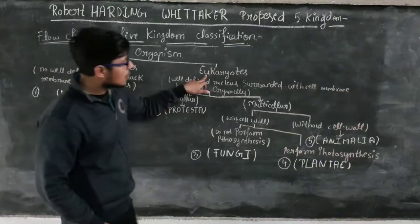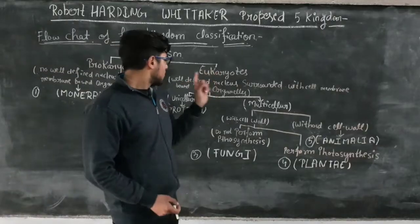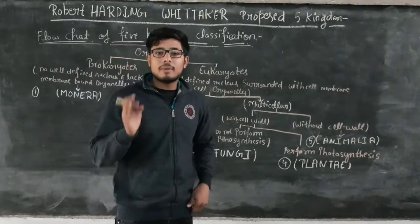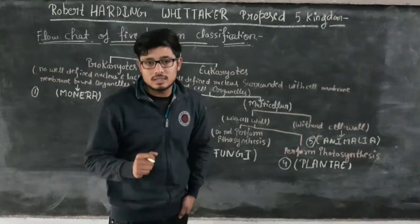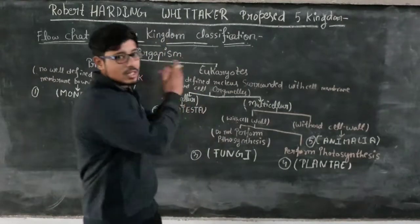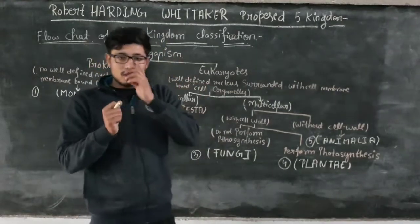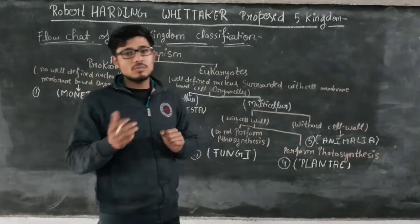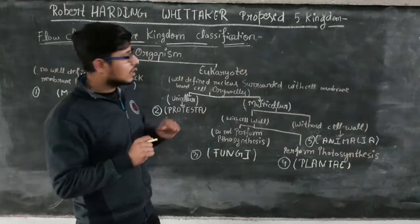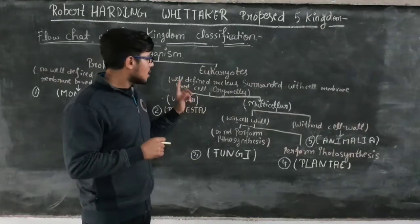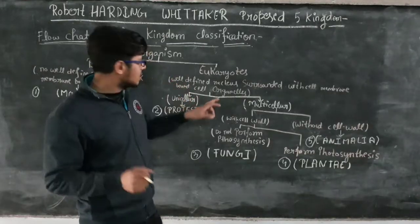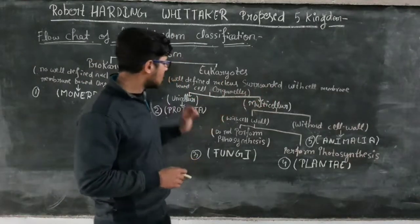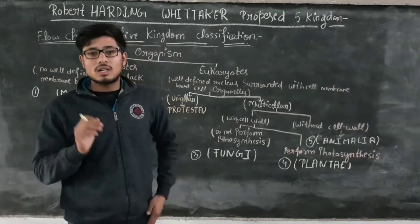The Eukaryotic Organism is where the well-defined nucleus is surrounded with the cell membrane and has membrane-bound organelles. This is just the opposite of Prokaryotic — there is no lack of membrane-bound organelles, as the nucleus is surrounded with the cell membrane and membrane-bound organelles.